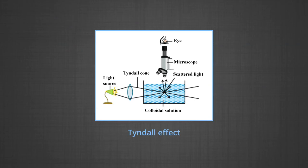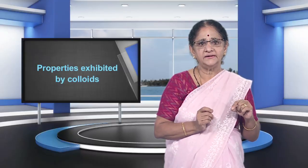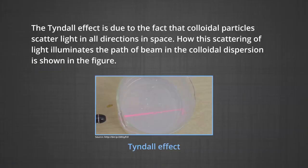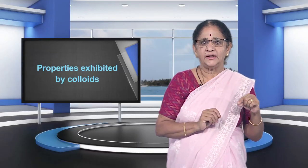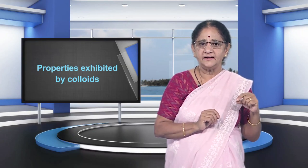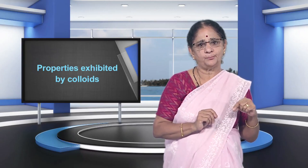As shown in the figure, when a colloidal solution is subjected to a beam of light from a source and then viewed through a microscope, we can see the bright cone of light called the Tyndall cone. The Tyndall effect is due to the fact that colloidal particles scatter light in all directions in space. How the scattering of light illuminates the path of the beam in the colloidal dispersion is shown in the figure. Tyndall effect can be observed during the projection of pictures in a cinema hall due to scattering of light by dust and smoke particles present there.